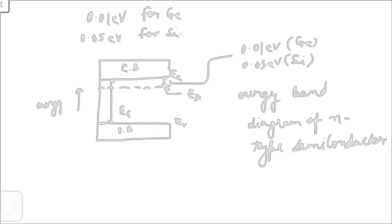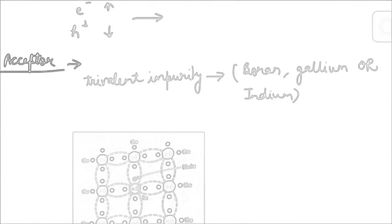When an intrinsic semiconductor is doped with n-type impurity, the number of electrons increases but the number of holes decreases. This is because the addition of n-type impurity increases the number of free electrons, which increases the probability of recombination of electrons and holes, thereby reducing the number of holes present in the extrinsic semiconductor.